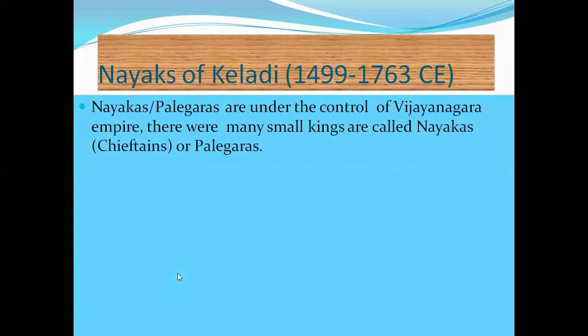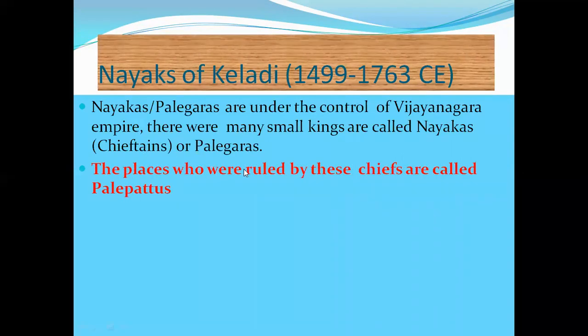The Nayakas of Keladi ruled from 1499 to 1763 CE. Nayakas and Palagaras were under the control of the Vijayanagara Empire. The word 'Nayaka' means a leader or ruler. Under the Vijayanagara Empire there were many small kings who looked after places — these kings were called Nayakas, also known as chieftains.